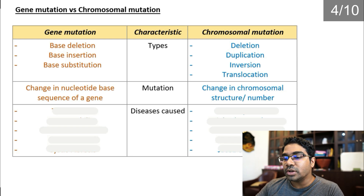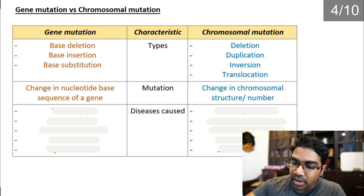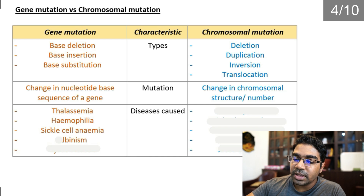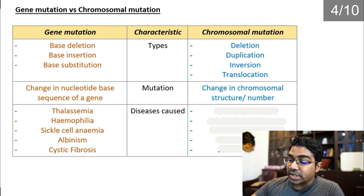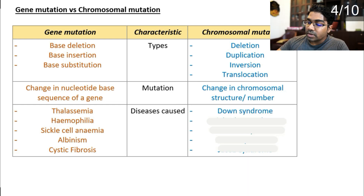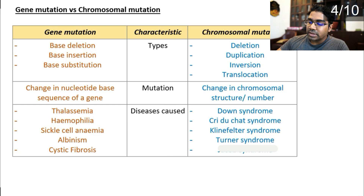Diseases caused by gene mutation include thalassemia, hemophilia, sickle cell anemia, albinism, and cystic fibrosis. For chromosomal mutation we have Down syndrome, Cri-du-chat syndrome, Klinefelter syndrome, Turner syndrome, and Jacob syndrome.